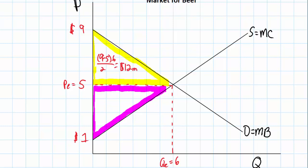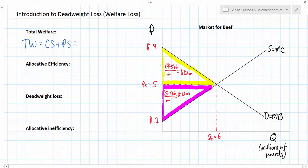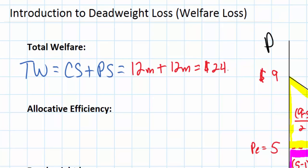This $12 million value represents how much additional benefit consumers enjoy at a price of $5 in the market for beef. We can do a similar calculation to find producer surplus. The area of the triangle outlined in purple: five minus one times six, divided by two, gives us the same result — total producer surplus is $12 million. So the total benefit enjoyed by consumers is $12 million and the same producer surplus is enjoyed by the suppliers of beef.